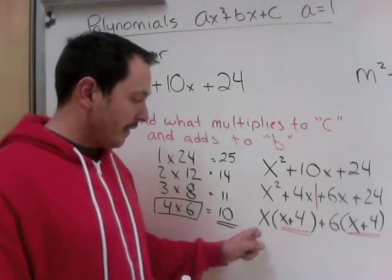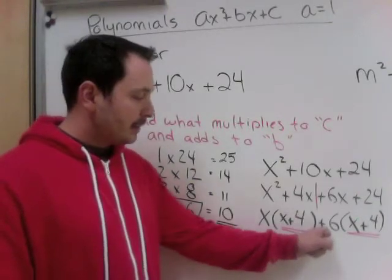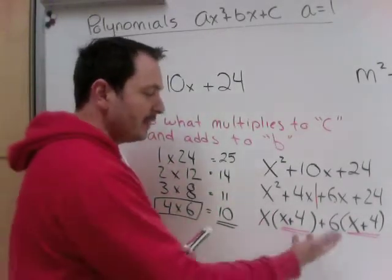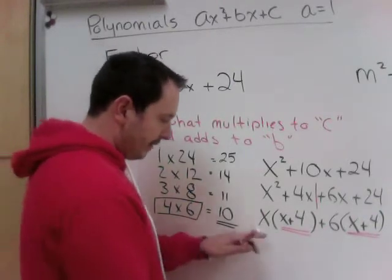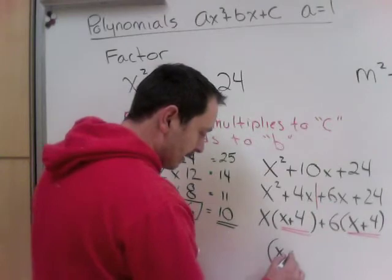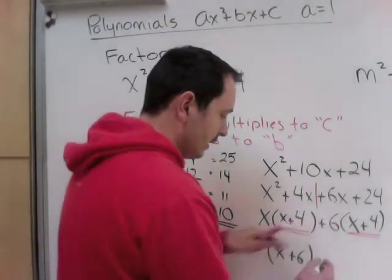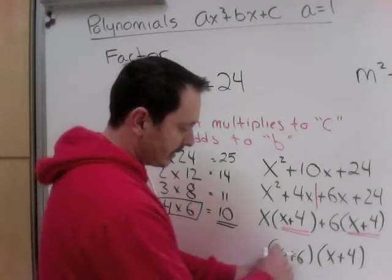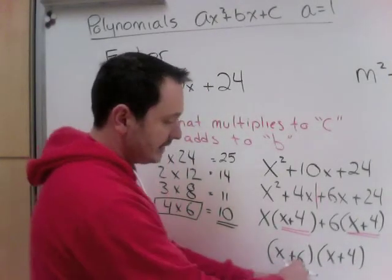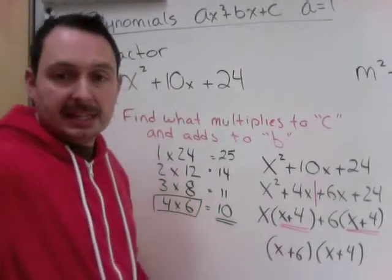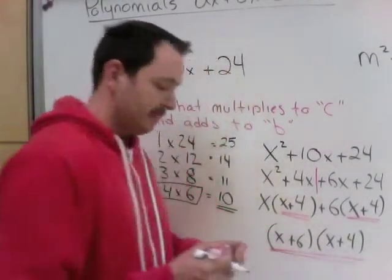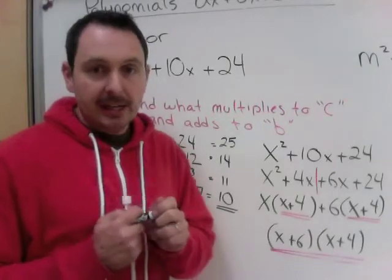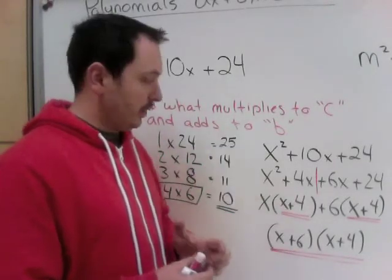And now for your final answer, you have x times this and plus 6 times this. And these two pieces are the exact same. So when we did FOIL earlier, think of it as undoing your FOIL. We have an x and a plus 6 times the x plus 4s. This now is our final answer.